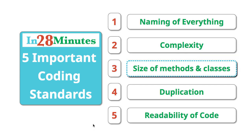The third one is the size of the methods and the size of the classes. You would want to have as small methods as possible because that's when you can name them very well. Same is the case with classes. You would want as small classes as possible.